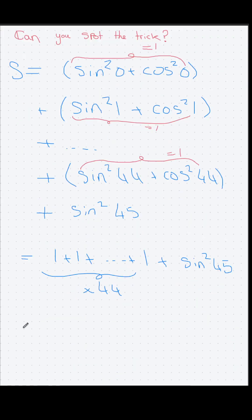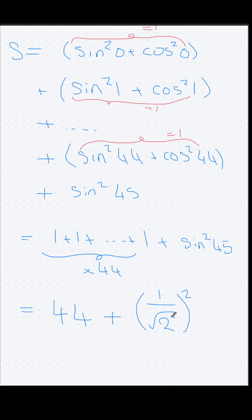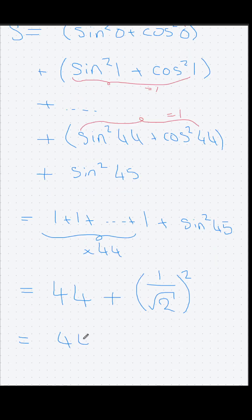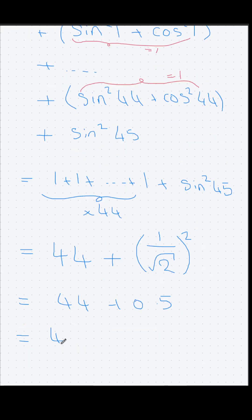Adding 1 to itself 44 times is also known as the number 44. Sine of 45 is 1 over the square root of 2. All squared becomes a half, so we have 44 plus 0.5 which gets a final answer of 44.5, option E.